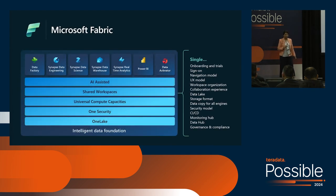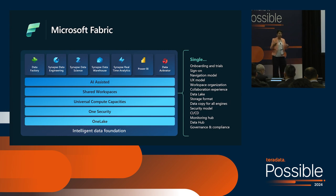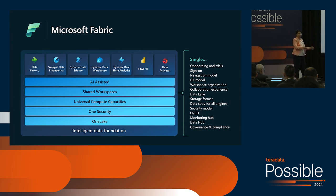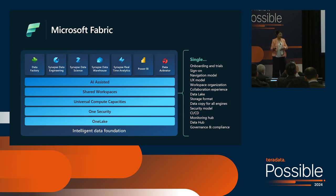Just one more click down into what that one copy of data means. Our investments are all about being open. We are looking at Delta Parquet — that's our support for open data format. Soon to come will be our support for Iceberg, and we'll also have Xtable support. Today, all of our engines — starting from Data Factory on the left to Data Activator — are each optimized to run on top of Delta Parquet. It's optimized so it can run, perform, and scale for all of these workloads that run on top of the one copy of data.